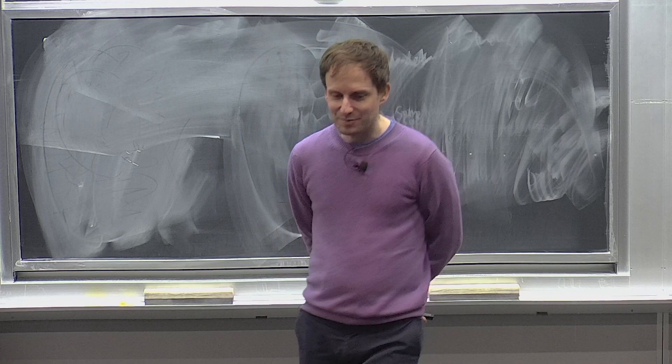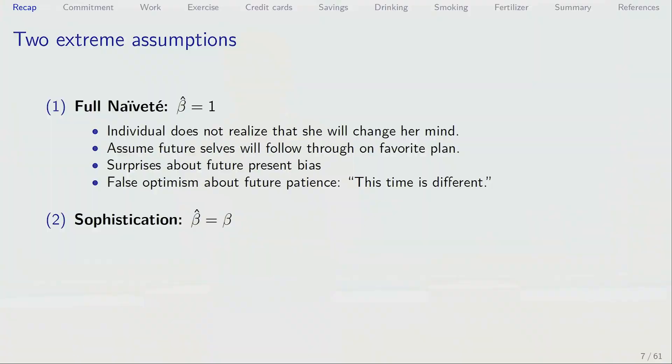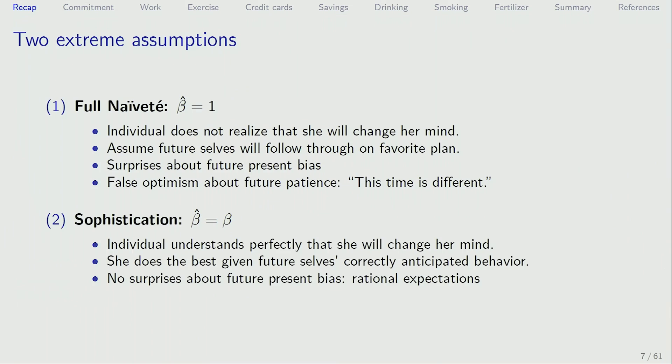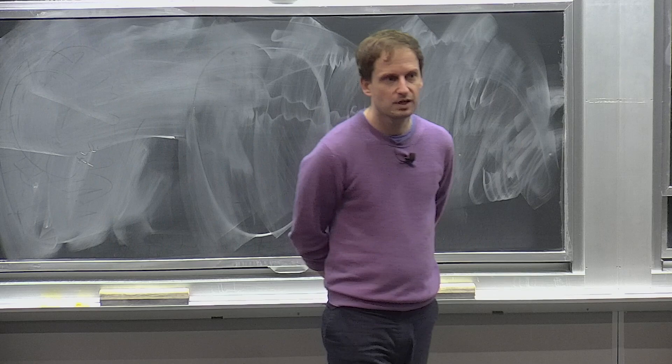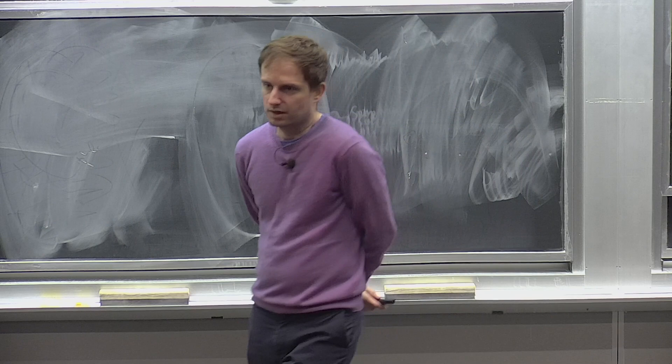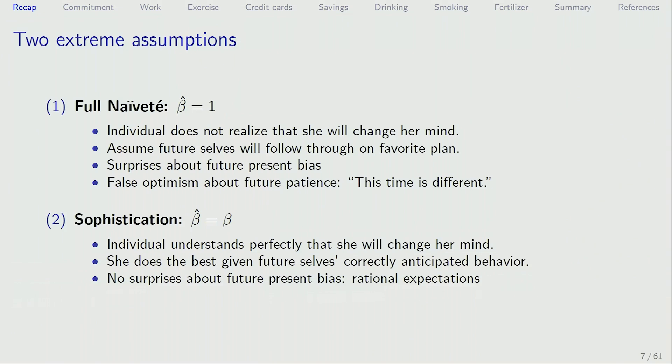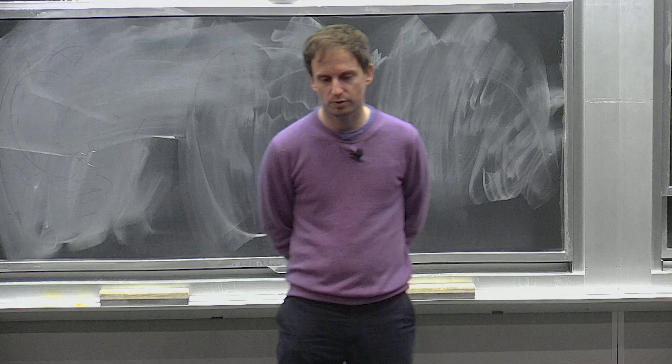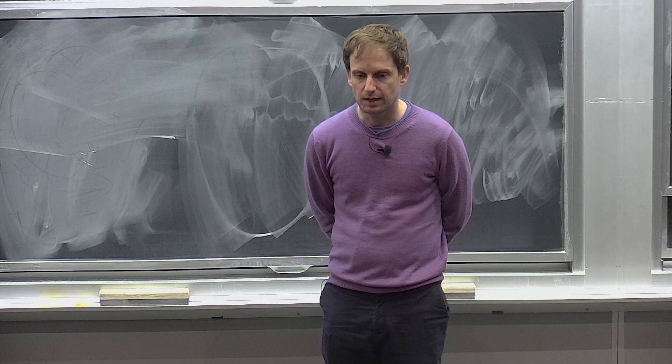The second extreme assumption is full sophistication — perfect foresight. The person actually understands their beta perfectly well, understands that she in the future might not stick to her plans and might change her mind. So she does her best given anticipated future changes in behavior, taking into account as a constraint what she will do in the future. There are no surprises about future present bias — the person has rational expectations.